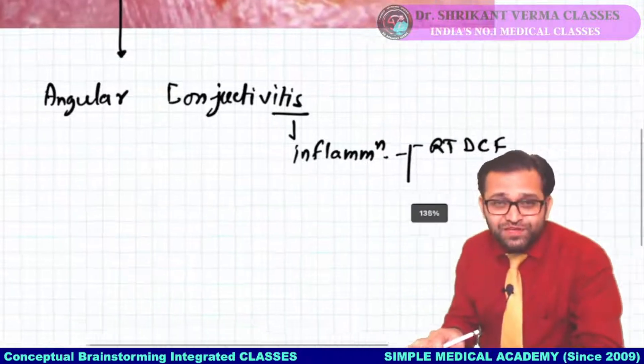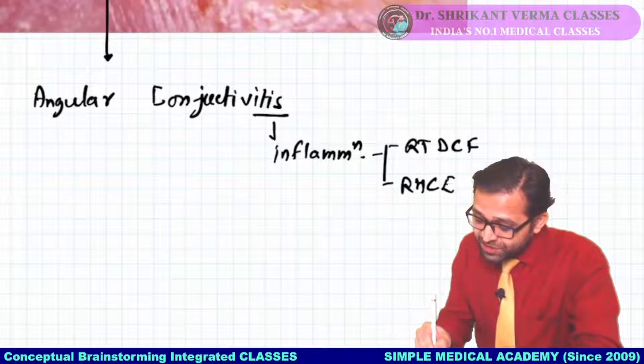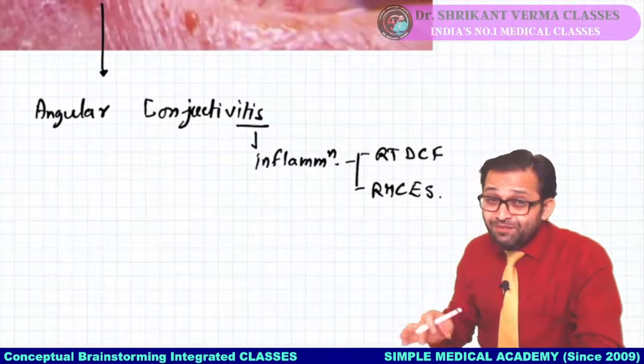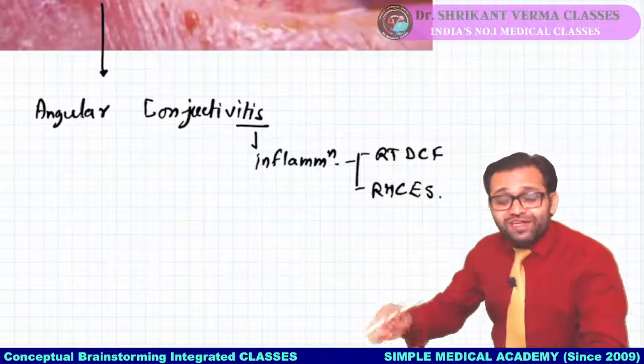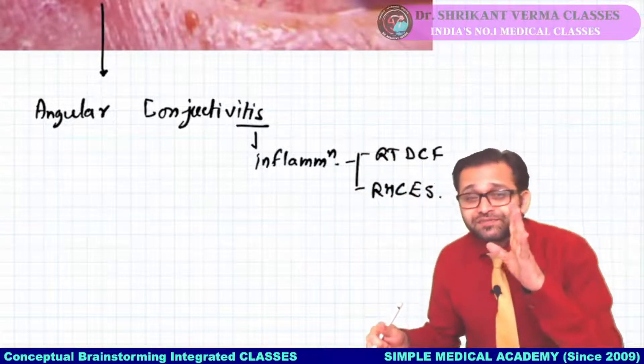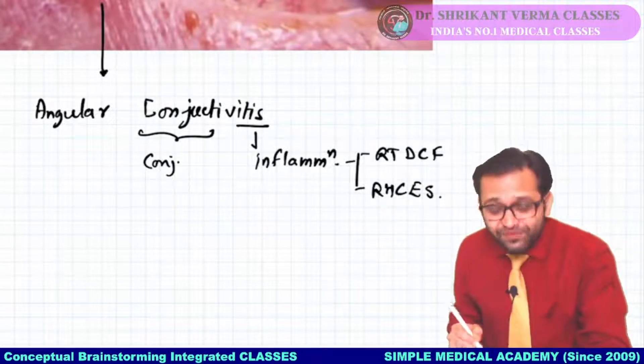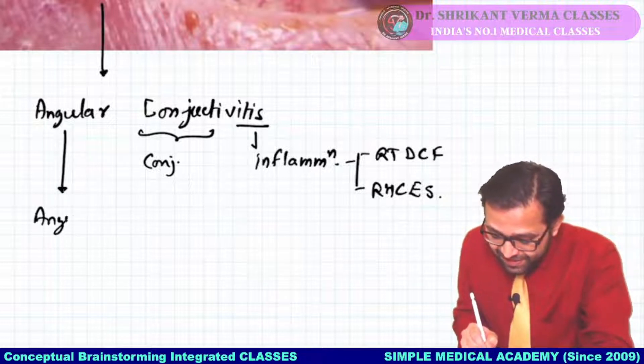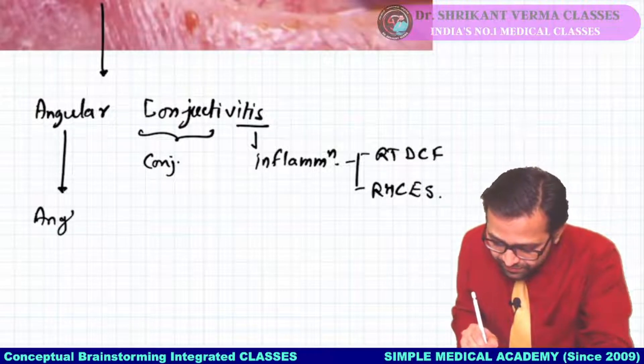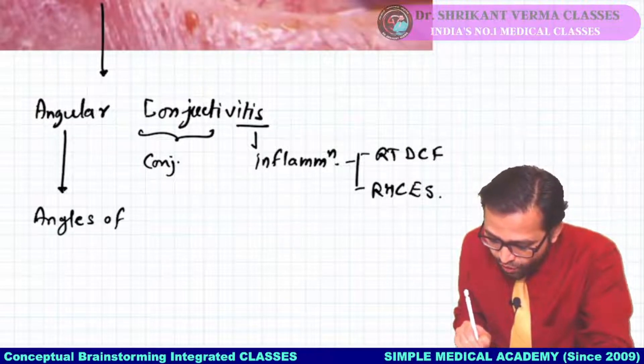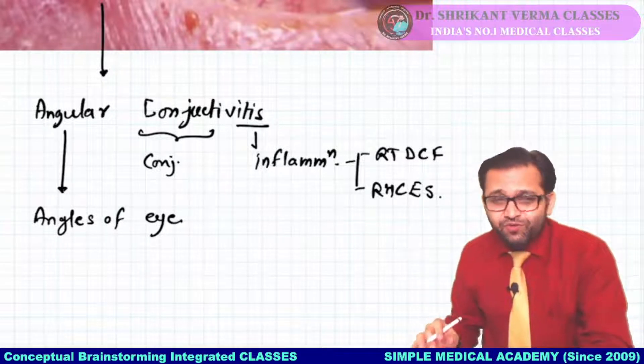So this is our angular conjunctivitis. For treatment we will give oxytetracycline and zinc lotion. Done, this topic is finished. But because in exams questions come on this, short notes come, so we will see the detailed theory part. We are covering our ideal textbook for ophthalmology for undergraduates in a very easy language, Khurana sir's textbook.